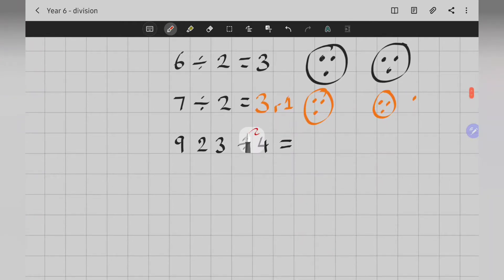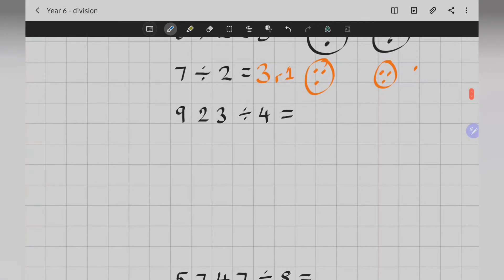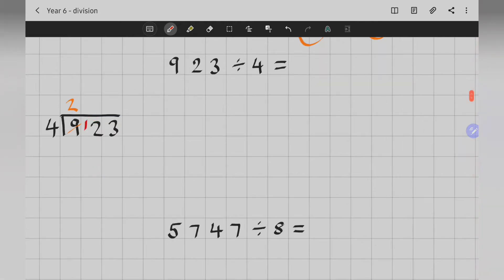So, 923 divided by 4. Let's set this out in the bus stop method. 923 in my bus stop, and I divide it by 4. 4 into 9, or 9 divided by 4. I can do that. I can do it twice. 4 times 2 is 8. I've got 1 left over. 1 spare. I'm going to pass that on.